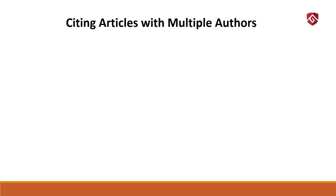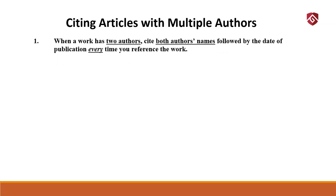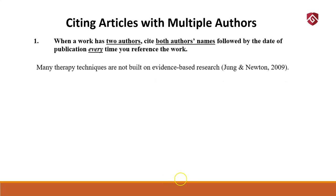Let's look at in-text citation for works by multiple authors. When a work has two authors, cite both authors' names followed by the date of publication every time you reference the work. So every time I cite this work: 'Many therapy techniques are not built on evidence-based research.' Jung & Newton, 2009. Notice the ampersand — I'm not typing 'and.' Jung & Newton, comma, and the period at the end. Every time I cite them in my paper, that's how I do it. There's no comma between the ampersand and the other author.